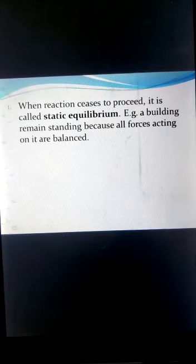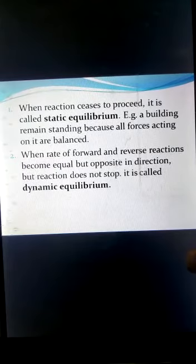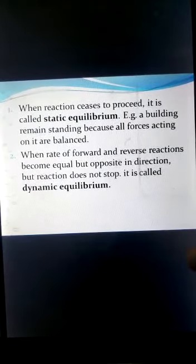To understand static equilibrium, consider a building that stays in place because all forces acting on it are balanced — static means stationary. In dynamic equilibrium, the rate of forward and reverse reactions becomes equal, but both reactions continue in opposite directions simultaneously — reactants form products while at the same time products recombine to form reactants. This is called dynamic equilibrium.